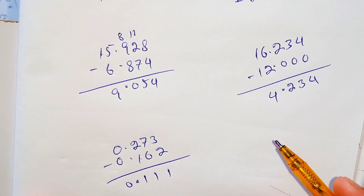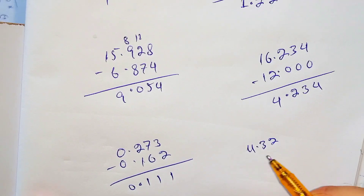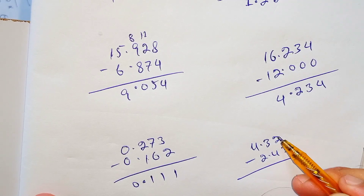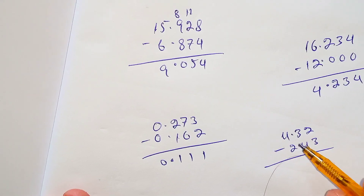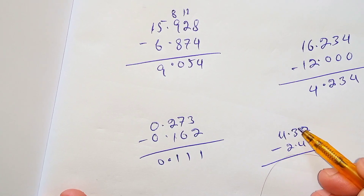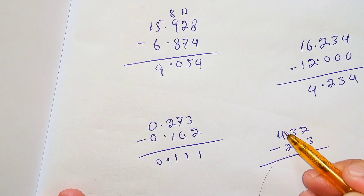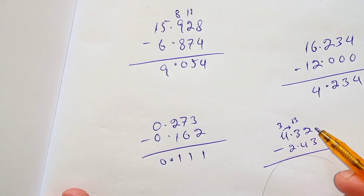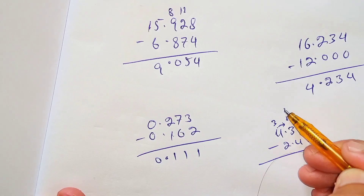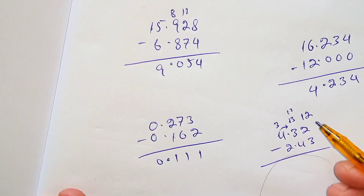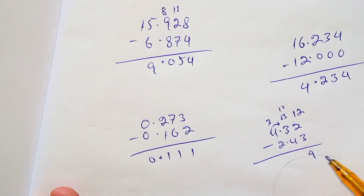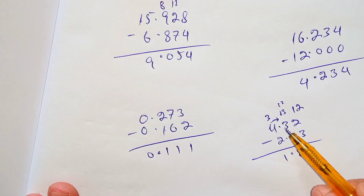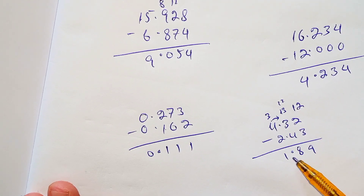Let's take another example in which we have to borrow from the whole number: 4.32 minus 2.43. We cannot directly subtract 3 from 2 or 4 from 3, so we borrow 1 from 4 — the 4 becomes 3 and the 3 becomes 13. Then we borrow 1 from 13 to the 2 — the 13 becomes 12 and the 2 becomes 12. So 12 minus 3 is 9, 12 minus 4 is 8. Bring down the decimal point, and 3 minus 2 is 1. So 4.32 minus 2.43 is equal to 1.89.